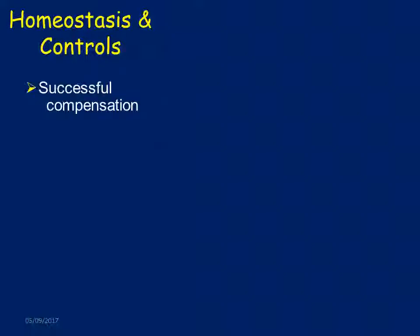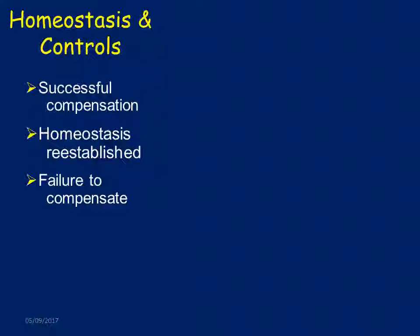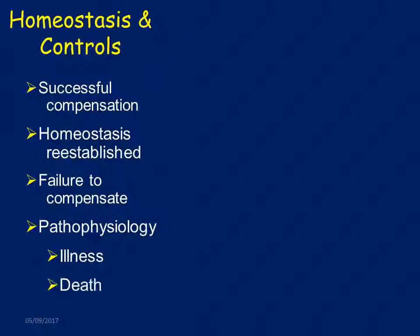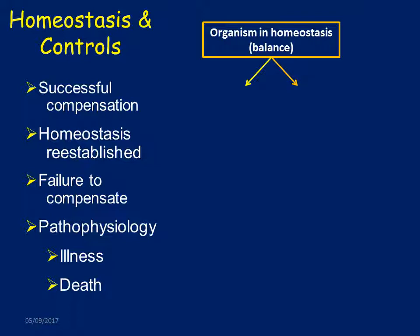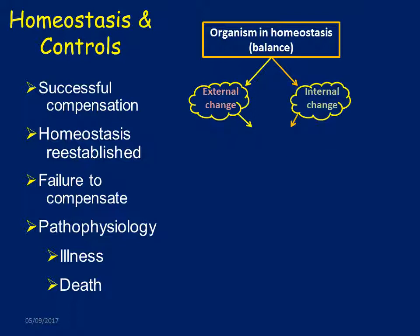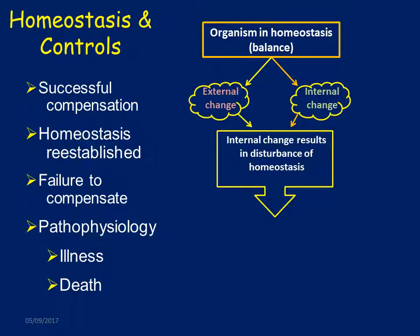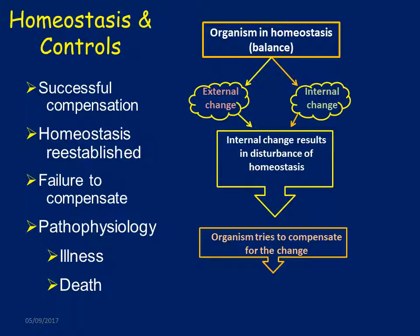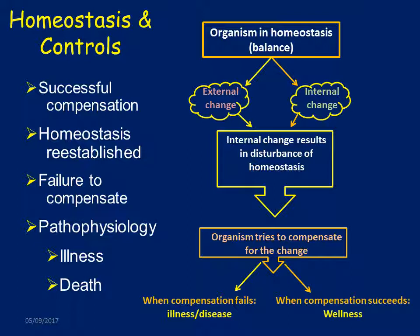As long as homeostasis is maintained, successful compensation re-establishes balance — that is the normal situation. If compensation fails, it leads to pathophysiology, illness, and potentially death. The organism is normally in homeostasis — when external or internal changes disturb it, the organism compensates. When compensation succeeds it leads to wellness; when it fails it leads to illness and disease.